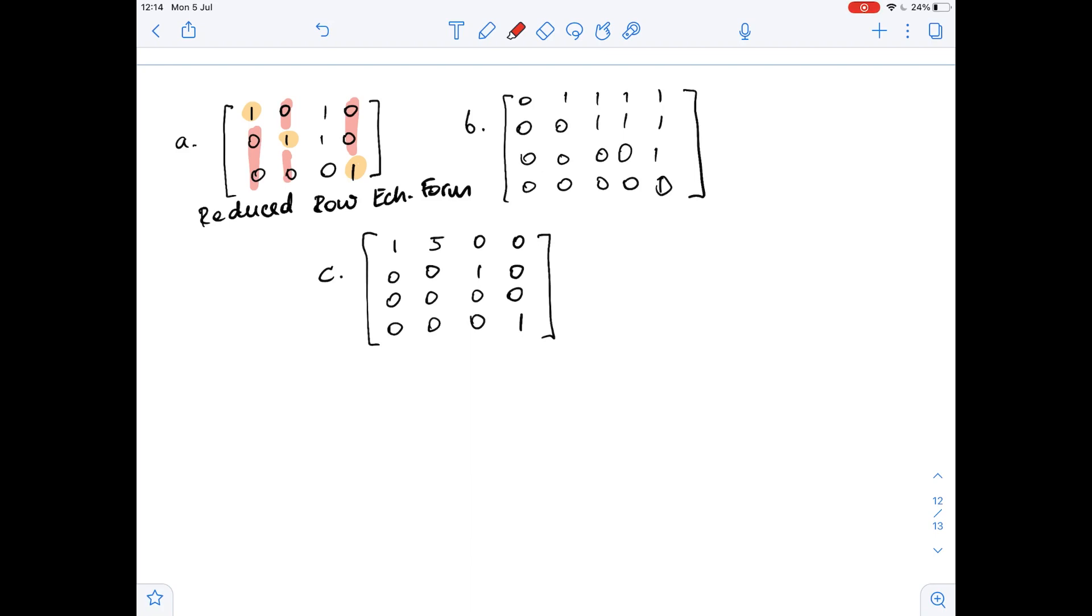However, there are several ones in the columns as you can see here, and that means that this is just echelon form. Echelon form.